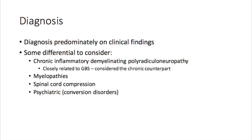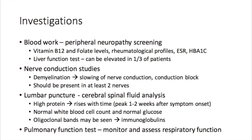In terms of diagnosis, it is predominantly clinical, based on clinical findings, but there are some differential diagnoses worth considering. These include chronic inflammatory demyelinating polyradiculoneuropathy, which is considered the chronic counterpart of Guillain-Barré syndrome, which is more acute in nature. Myelopathies, spinal cord compression, and psychiatric conditions such as conversion disorders can also be considered.